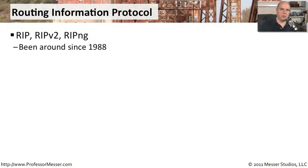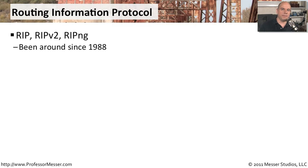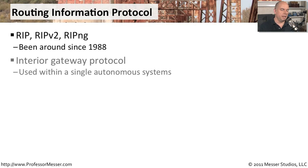You may see routing information protocol written a number of different ways. There's RIP, RIP version 2, and RIP-NG that's used in IPv6. The entire protocol of RIP goes way back to 1988, so it's a routing protocol that we've had around and we've made many modifications to through the years.